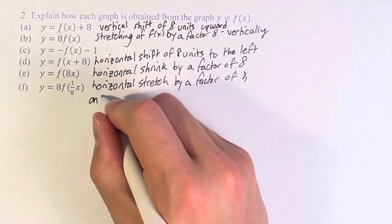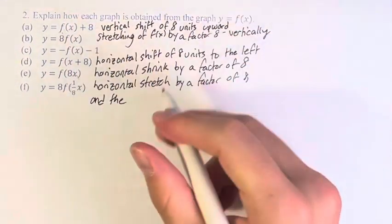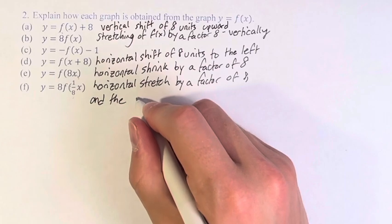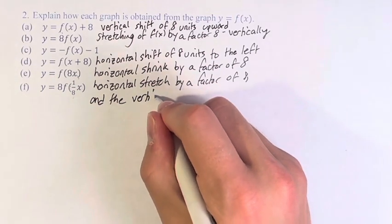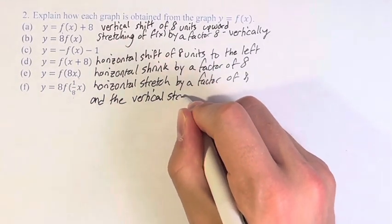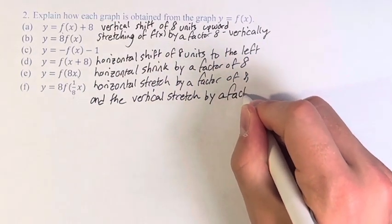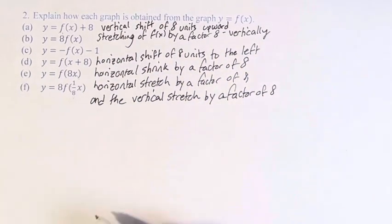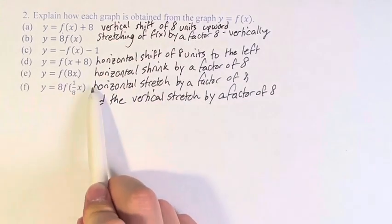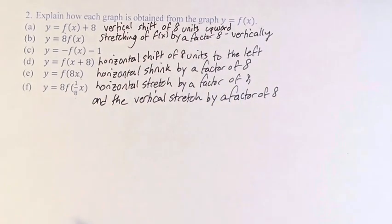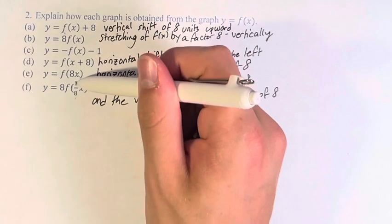And then 8f of x, the vertical stretch by a factor of 8. It is important that you do the horizontal before the vertical. We are moving outwards from what's inside the function to outwards.